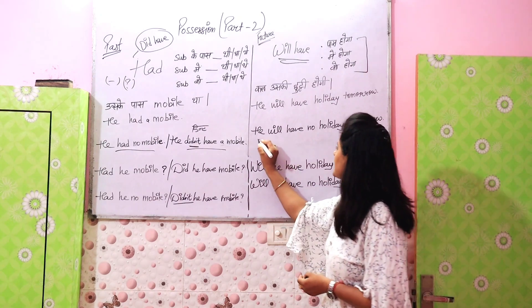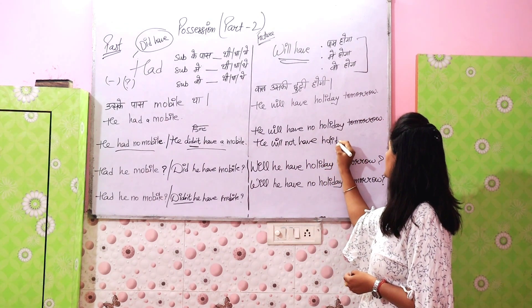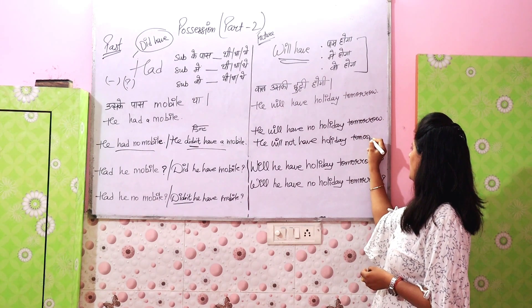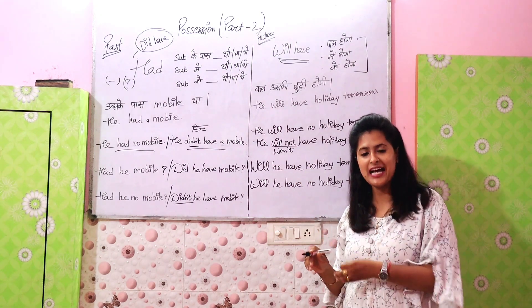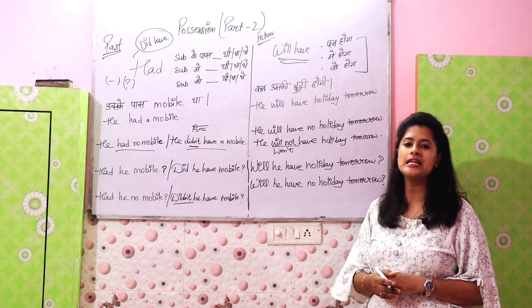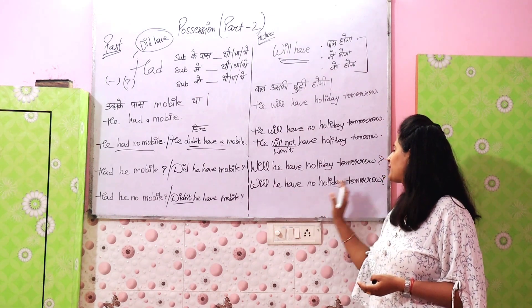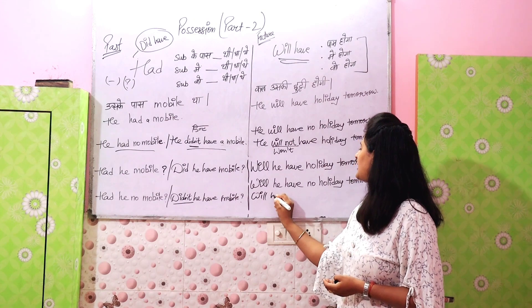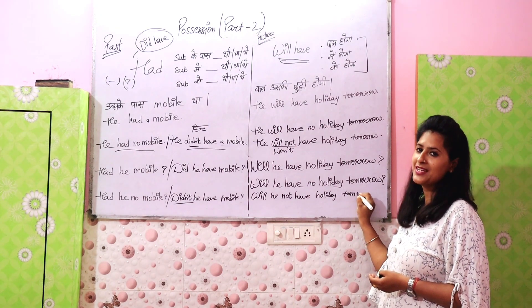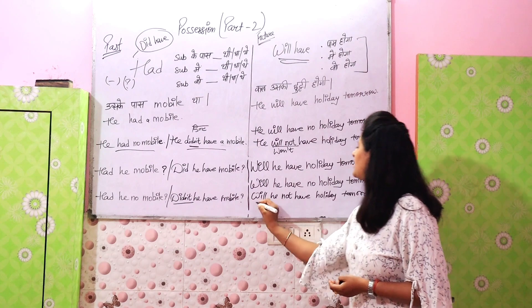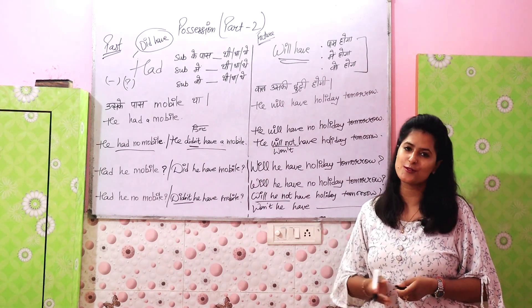We also have more options for the negative. We can say 'He will not have holiday tomorrow,' or we can contract it to 'He won't have holiday tomorrow' — aapke paas option hai. For the question: kya uski kal chutti hogi? — 'Will he have holiday tomorrow?' And the negative interrogative: kya uski kal chutti nahi hogi? — 'Will he have no holiday tomorrow?' or 'Will he not have holiday tomorrow?' or 'Won't he have holiday tomorrow?' All of these are the same.